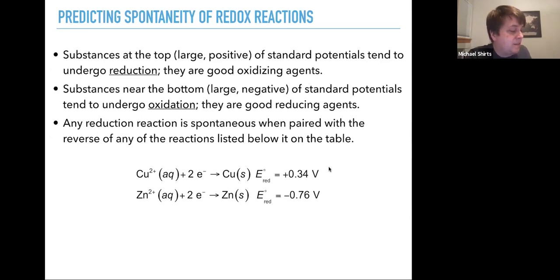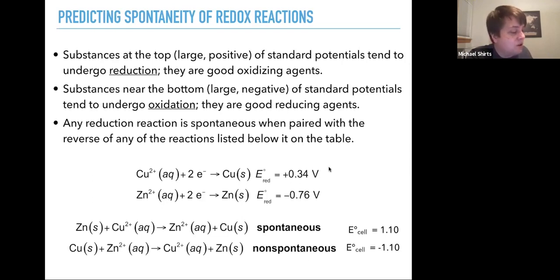So if we combine them together, what we'd see since zinc is further down than copper, that if we oxidize zinc and react it with copper where copper is reducing, that would have a positive potential. So zinc oxidizing and copper reducing is spontaneous with a standard cell potential of 1.10 volts.